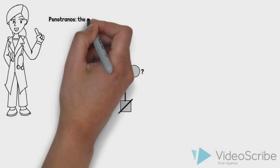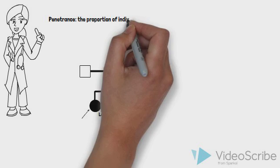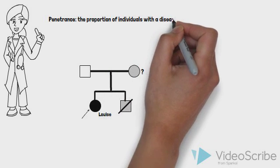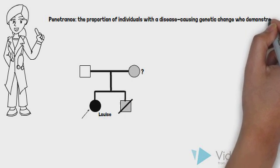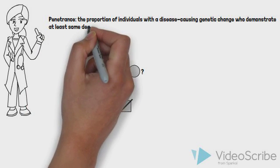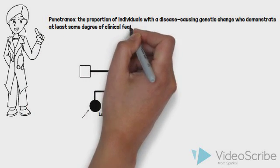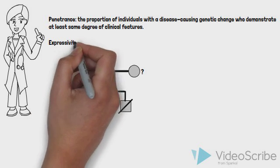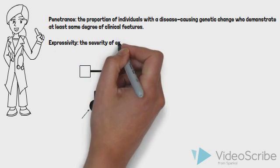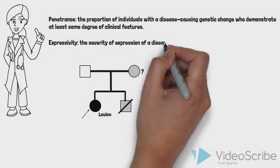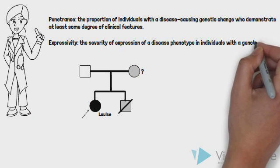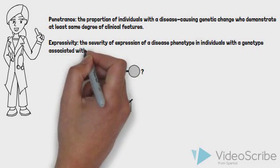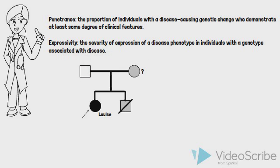Penetrance is a term used to describe the proportion of individuals with a disease-causing genetic change who demonstrate at least some degree of clinical features as a result. For example, 25% of people with an identified long QT gene variant have a normal corrected QT interval on baseline EKG. Expressivity is a term that describes the severity of expression of a disease phenotype in individuals with a genotype associated with disease. In the case of long QT syndrome, there can be variable expressivity within families. For this reason, if a baseline EKG is normal, an exercise EKG can be done to increase testing sensitivity.